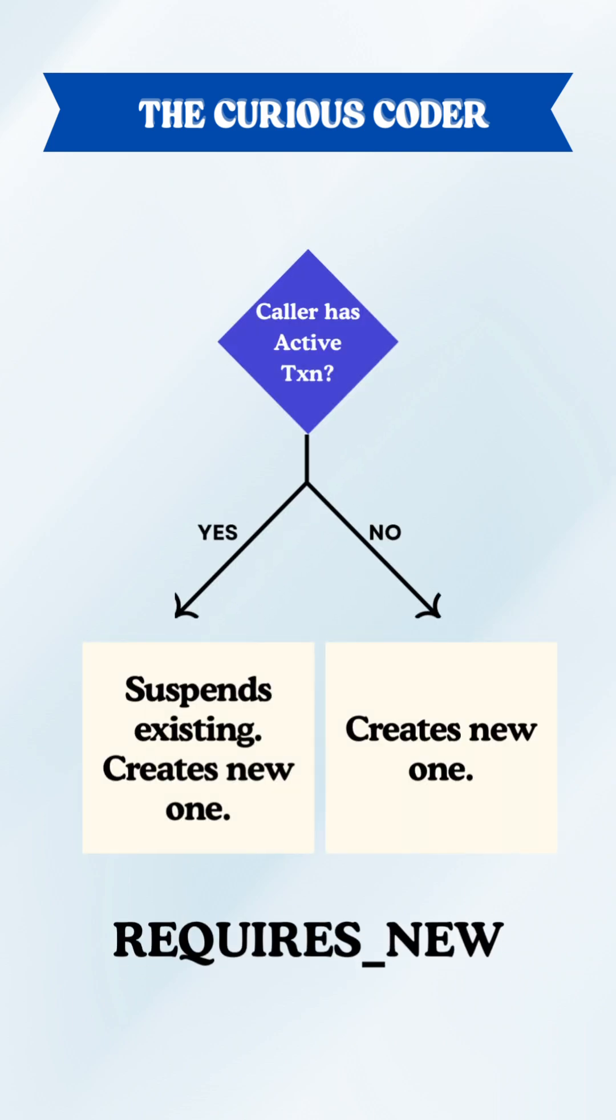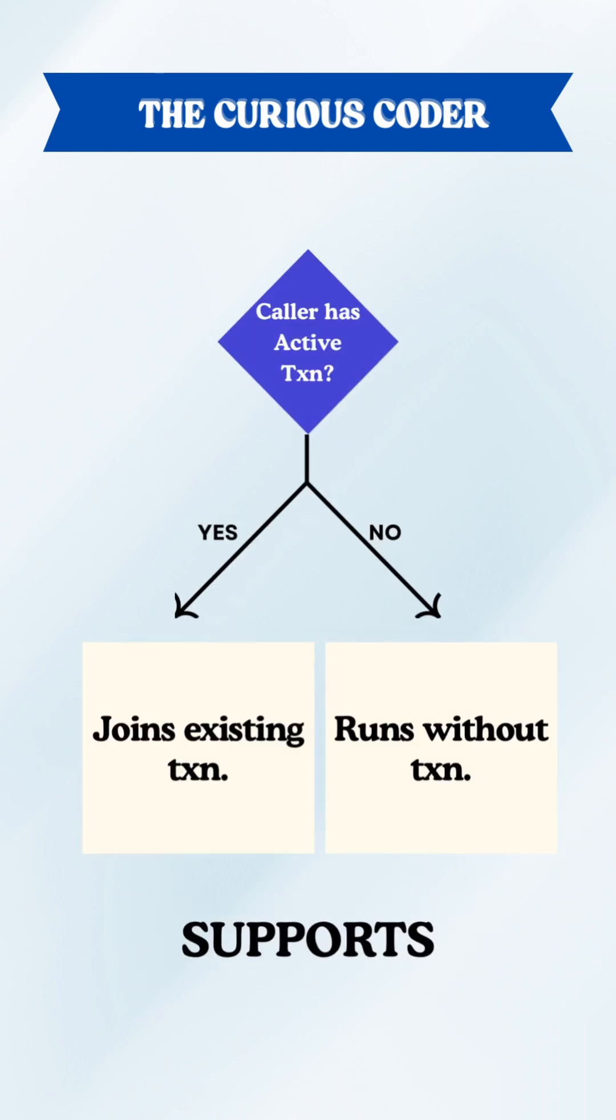Then we have requires new. This always creates a new transaction. Supports also joins the existing transaction but unlike required, it runs non-transactionally if none exists.